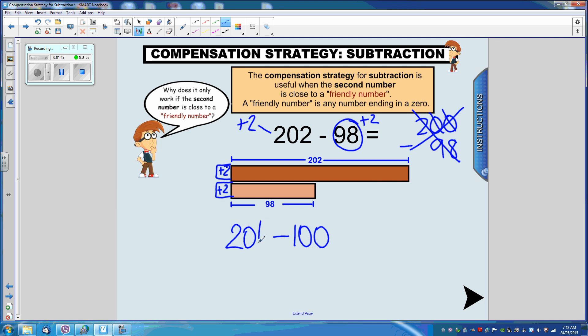And you can see that that's a much easier equation to work with. 204 take away 100 equals 104. So when we use the compensation strategy for subtraction, you must do the same to both numbers.